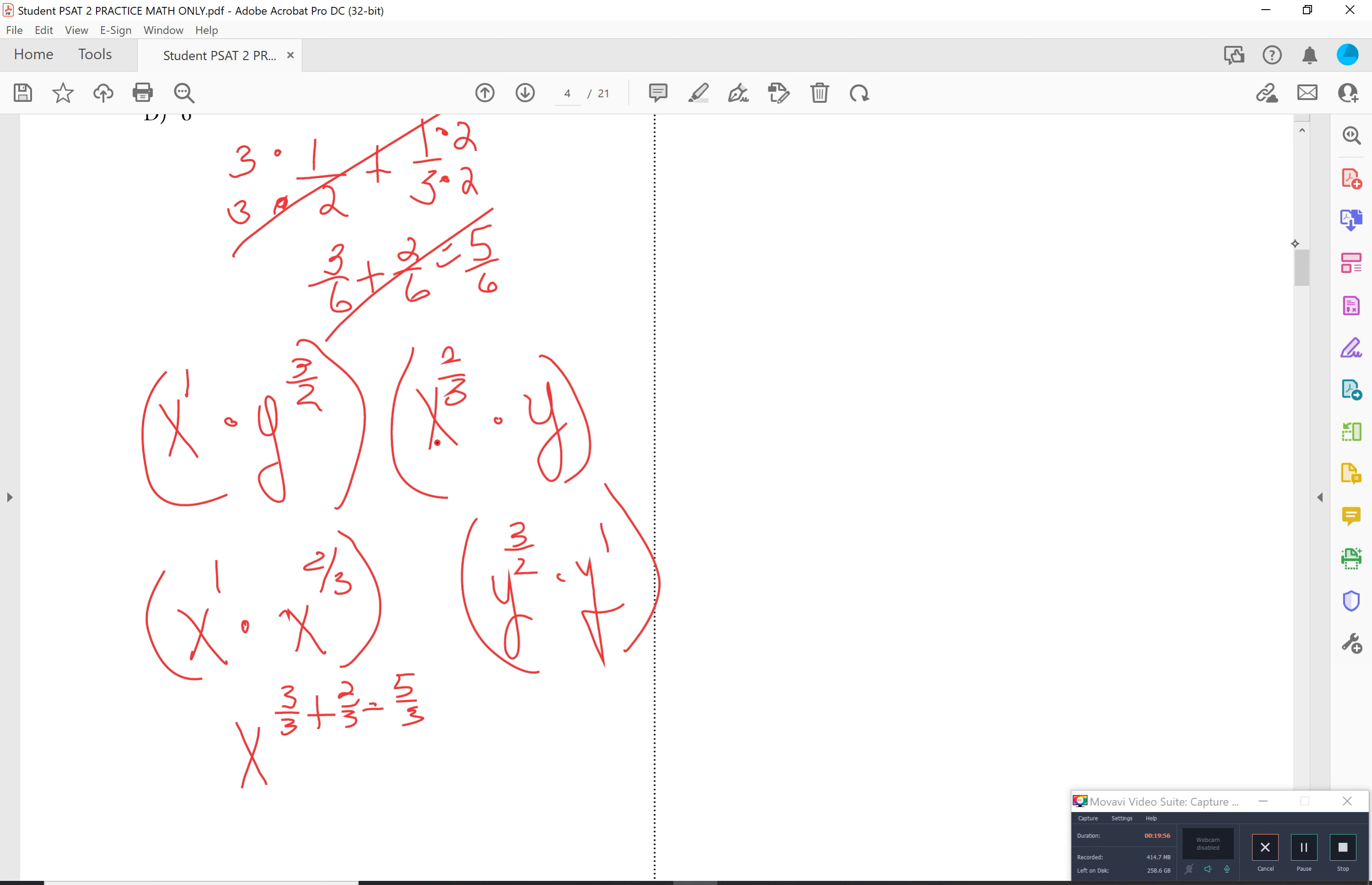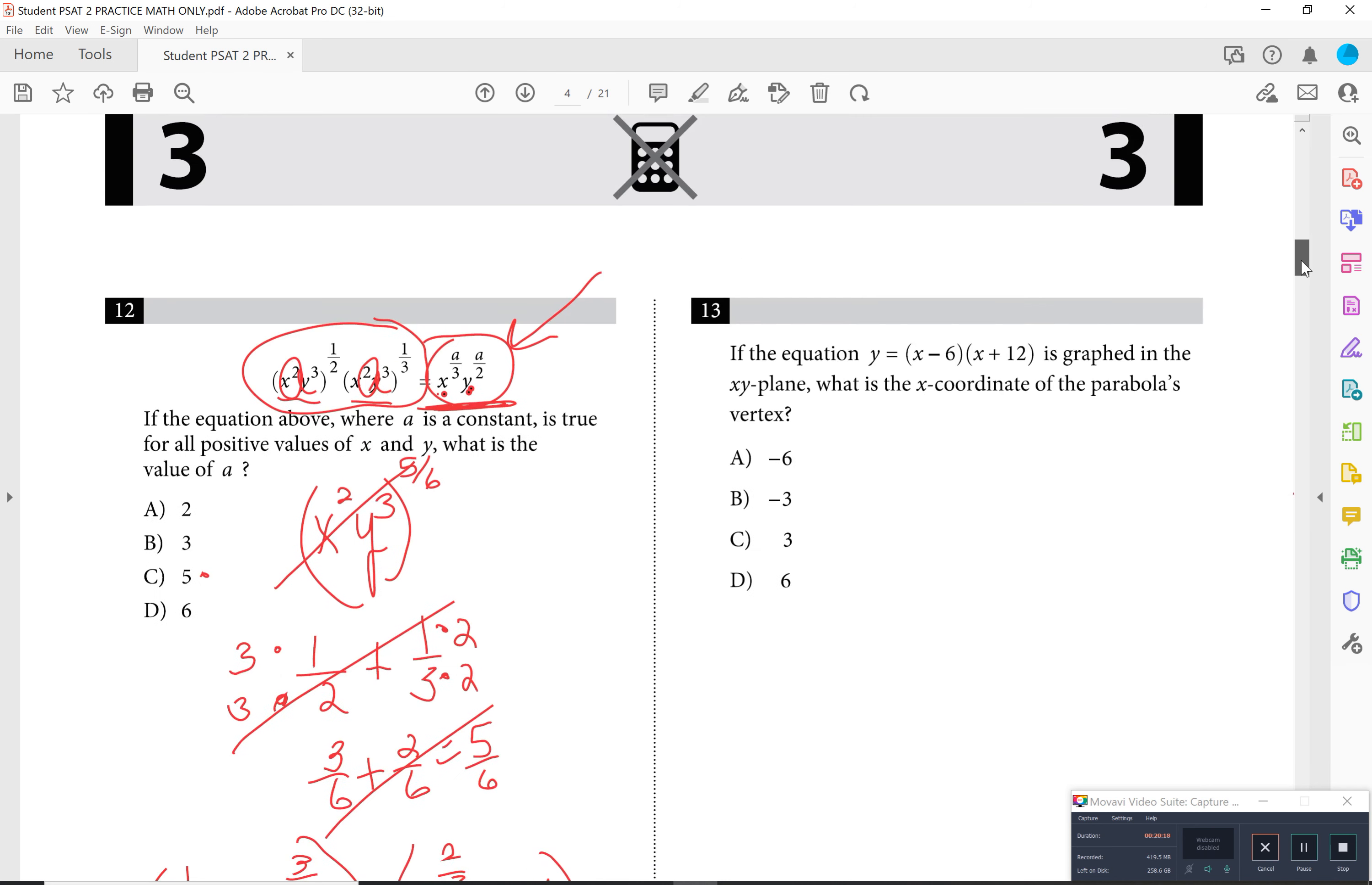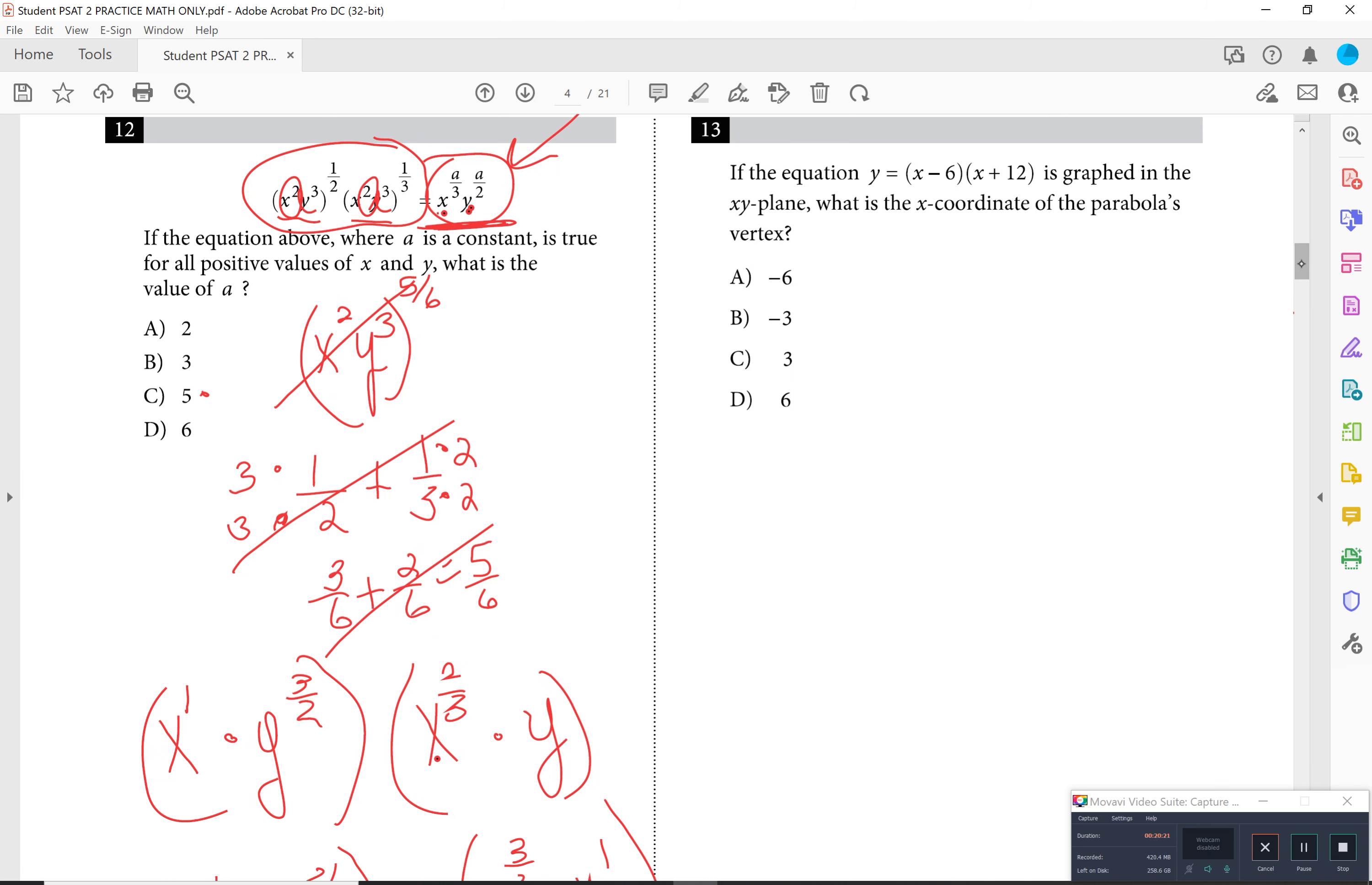This becomes X to the 3 over 3 plus 2 over 3, which is X to the 5 over 3, hence your answer. And then over here, you end up with Y to the 3 over 2 plus 2 over 2. Once again, you end up with Y equals 5 halves. Now, you see how they have it set up. So your A value happens to be 5, but they do want you to use this long method. I know you guys, some of you are going to take a shortcut, but here's the gist of it. Because these are not like bases, you should not be able to add those two exponents.